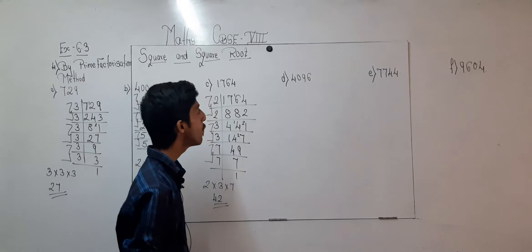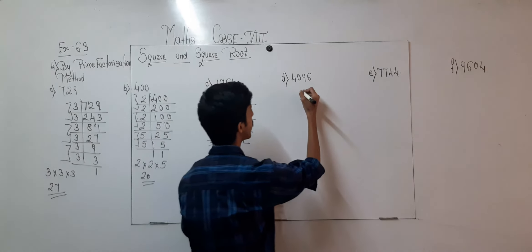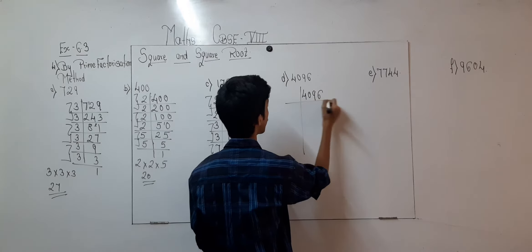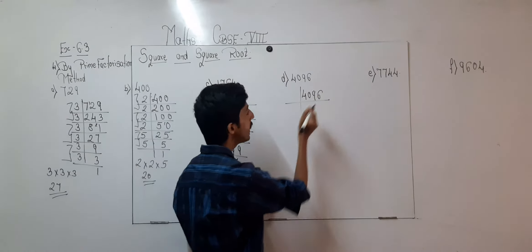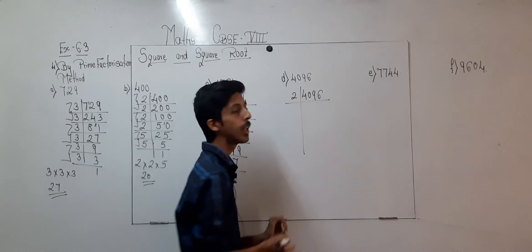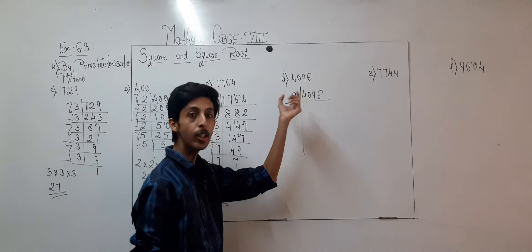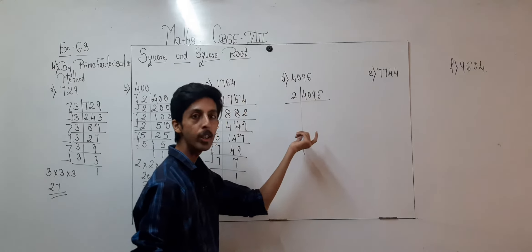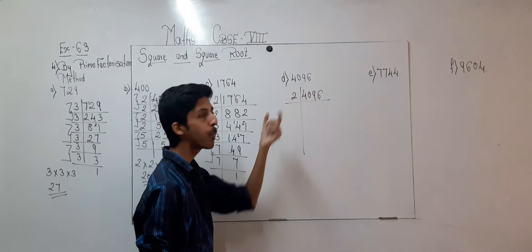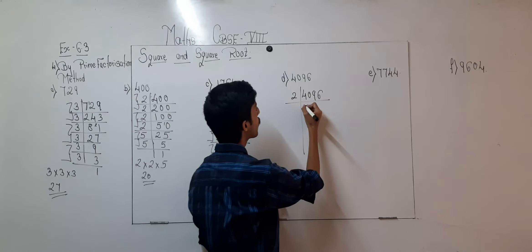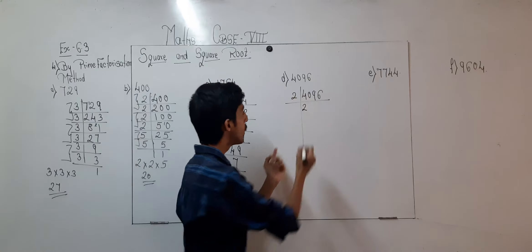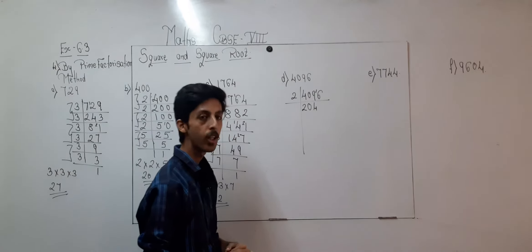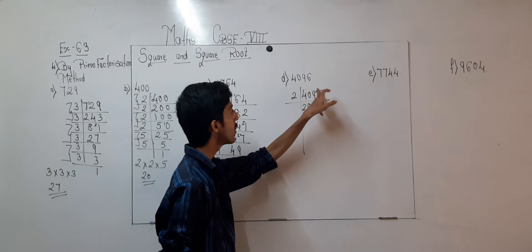Now moving on to question number D, which is 4096. Again 6 is the last digit, so we start with the table of 2. We take 2 and 3 only because they are the smallest prime numbers; the smallest prime number is 2. Starting with 2: 2 times 2 is 4, 0 is not coming in the table of 2, so same 0. Then 2 times 4 is 8; 1 is remaining because 9 minus 8 gives 1.